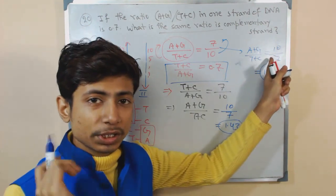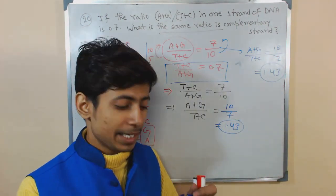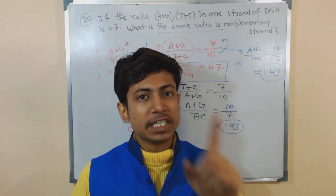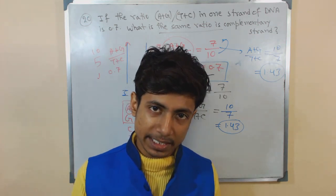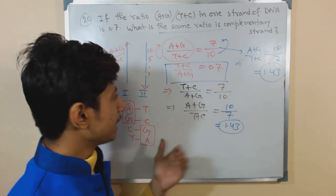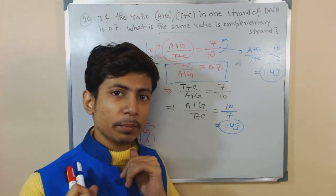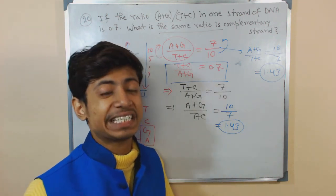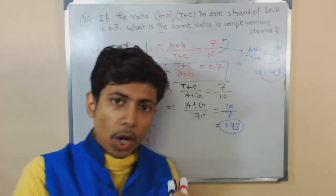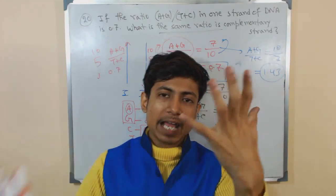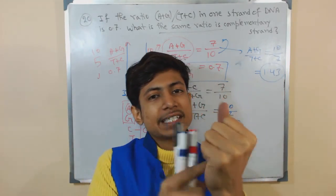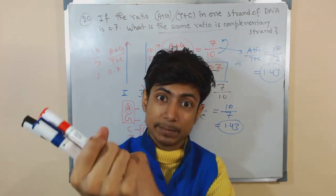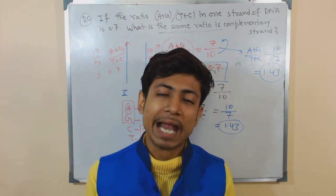Why are we swapping the values? Because of complementarity. If adenine is present as 10 in one strand, thymine will be present as 10 in the other strand. If guanine is present as 10, cytosine will be 10. If one strand has more A and G, the opposite strand will have more C and T instead. It is all about distribution — everything must be balanced in the DNA.